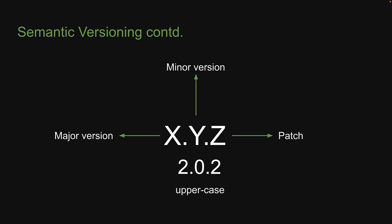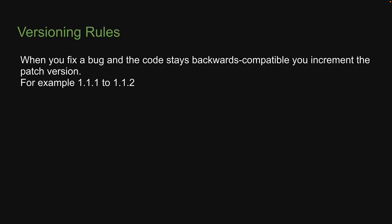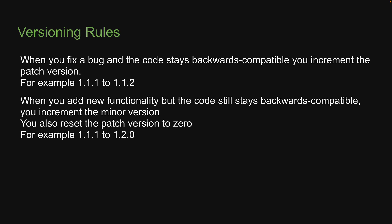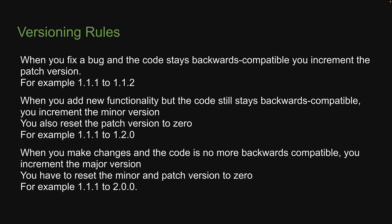Now the real question is: when do we bump the different version numbers? We can't just increment the version by a random number. Here are the rules. When you fix a bug and the code stays backwards compatible, you increment the patch version — for example, 1.1.1 to 1.1.2. When you add new functionality but the code still stays backwards compatible, you increment the minor version and reset the patch version to 0 — for example, 1.1.1 to 1.2.0. When you introduce breaking changes, you increment the major version and reset the minor and patch versions to 0 — for example, 1.1.1 to 2.0.0. This semantic increment will help users make decisions regarding their projects.